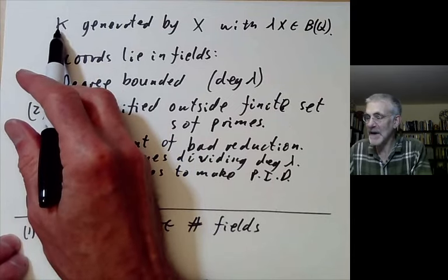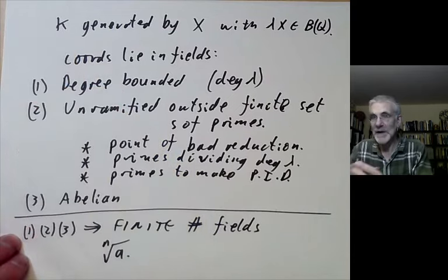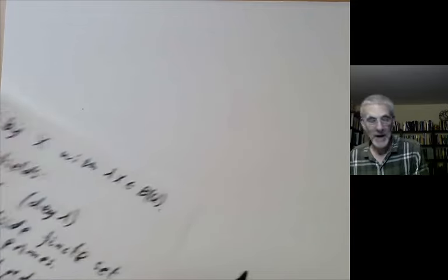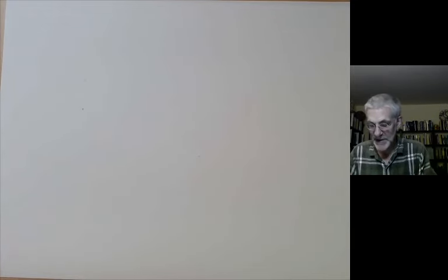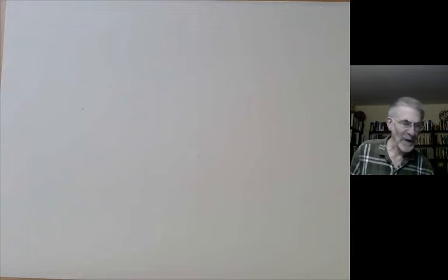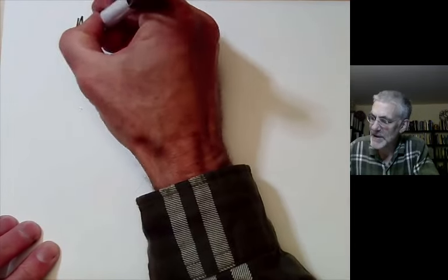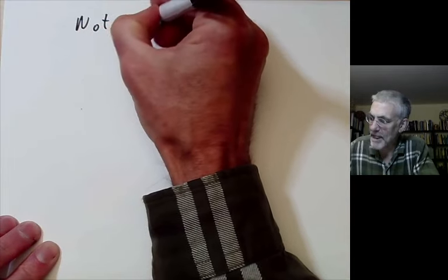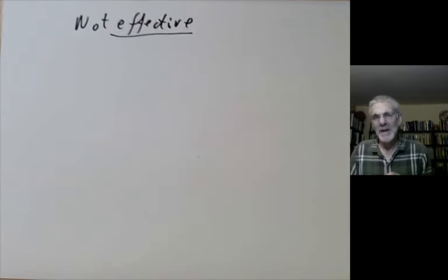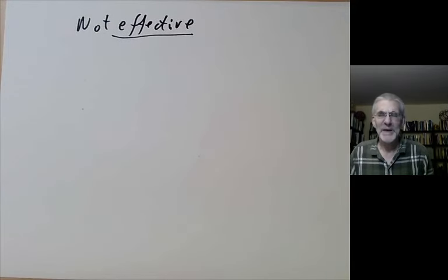Proving there are a finite number of fields with these three properties is a routine piece of algebraic number theory. So that shows that this field K is a finite degree. So the Galois group is finite. And so that funny cohomology group is finite. So that completes the sketch of the proof.